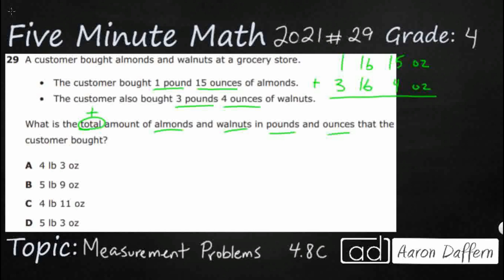So, 15 and 4 is 19 ounces. 3 and 1 is 4 pounds. So, 4 pounds, 19 ounces. Easy peasy. Except it's not there.